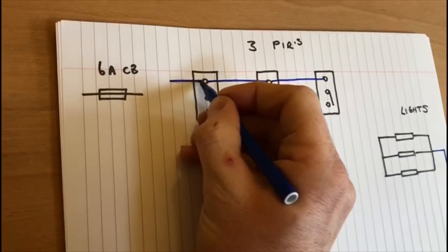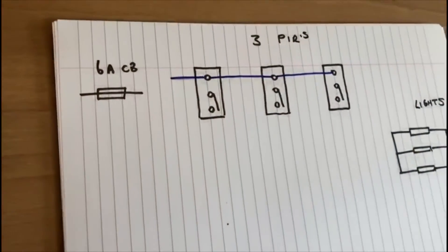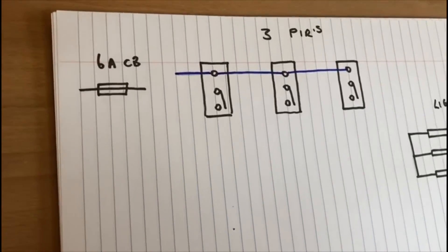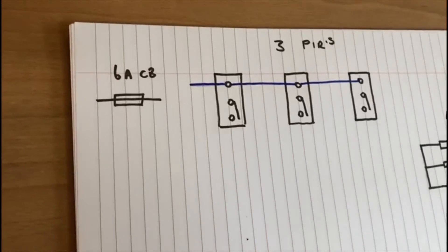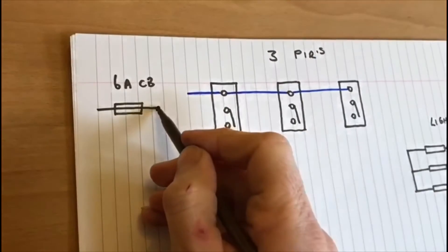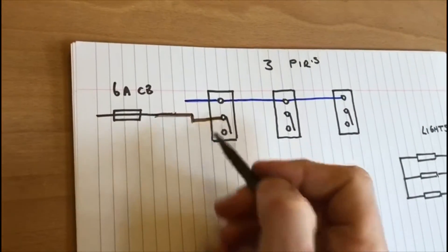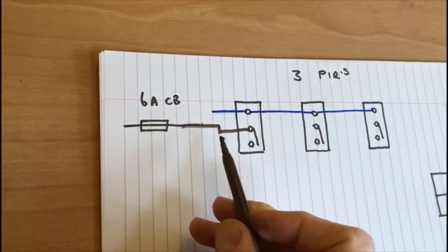Then they simply just link across. In a domestic installation this could just be the use of three core and earth.